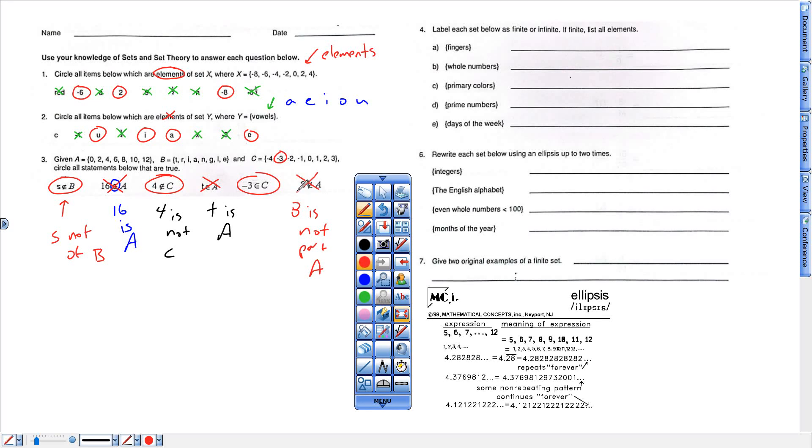All right, here we go. This says infinite, which means they stop. I'm sorry, finite means it stops. Infinite means never stops. If finite, list all the elements. So here we go. Fingers are finite, and I guess you just say the elements are 10 fingers.